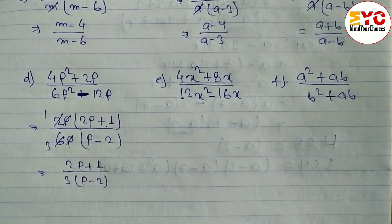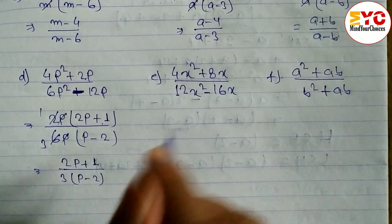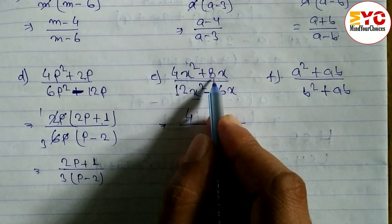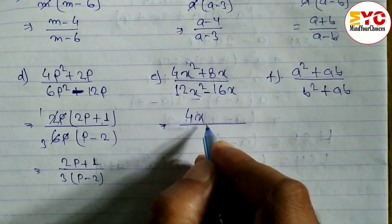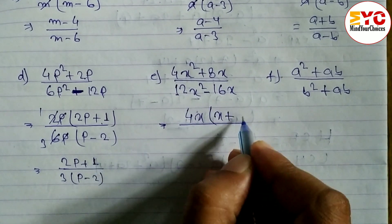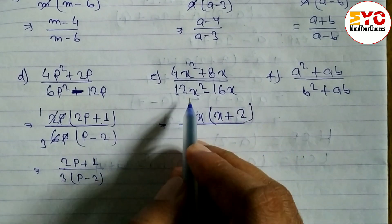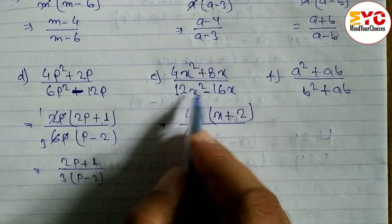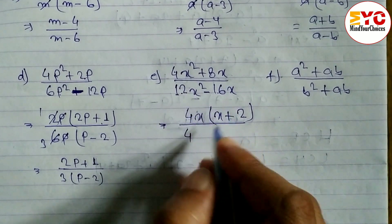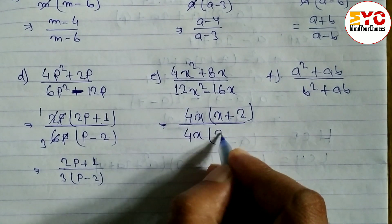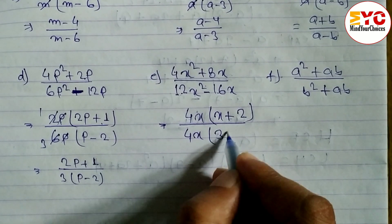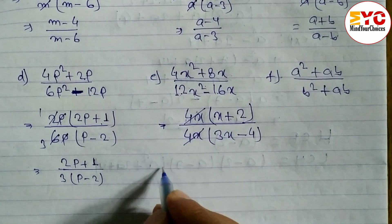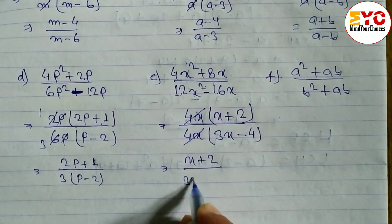Question e: in the numerator we have 4x squared plus 8x — common factor is 4 (since 4 times 2 is 8) and x, leaving 4x(x plus 2). In the denominator, 12x squared minus 16x — common factor is 4 and x, leaving 4x(3x minus 4), because 4 times 3 is 12 and 4 times 4 is 16. After cancelling 4x and 4x, the answer is (x plus 2) over (3x minus 4).